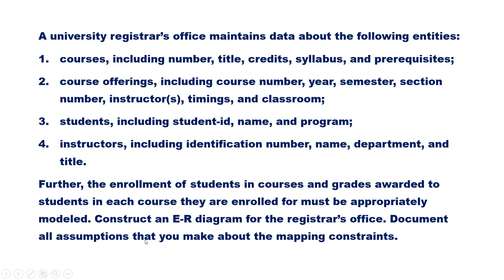Construct an ER diagram for the registrar's office. Document all assumptions that you make about the mapping constraints. From the description, we can identify four different entities: Courses, course offerings, students and instructors.